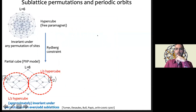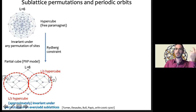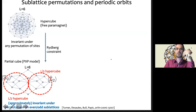The other reason we call it scarring is because it has a very interesting semi-classical limit. In the graph picture: the free paramagnet is a hypercube; when we apply the Rydberg constraint we get a partial cube (the PXP model), which actually contains two smaller hypercubes of exactly half the dimension. The free paramagnet was invariant under any permutation of lattice sites, whereas the PXP model is approximately invariant under permutation on either the odd or even sublattice — a kind of sublattice permutation symmetry.